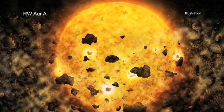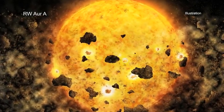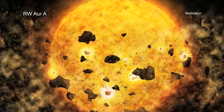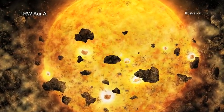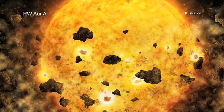Since 1937, astronomers have puzzled over the curious variability of a young star named RW Aurigae A, located about 450 light-years from Earth.